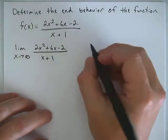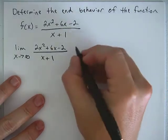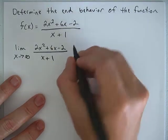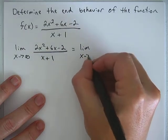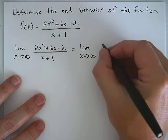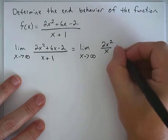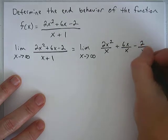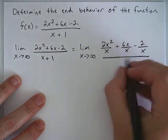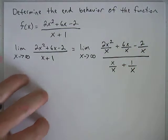We can simplify that a little by dividing the top and bottom by x. That means every term in the top and bottom will get divided by x. So let's rewrite that as the limit as x approaches infinity of (2x²/x + 6x/x - 2/x) divided by (x/x + 1/x). So what did that accomplish?